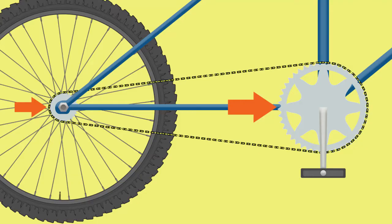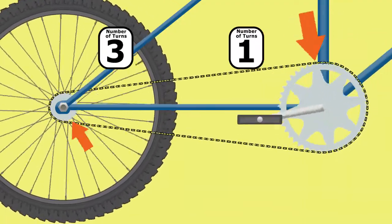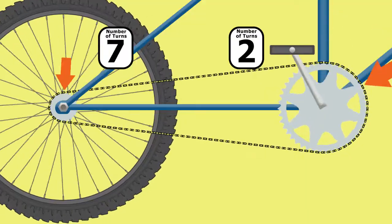Knowing ratios can help you solve problems. Try this one. How many times will the small gear turn if the cyclist pushes the pedal to make three complete rotations?